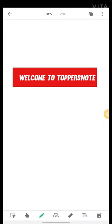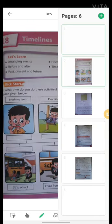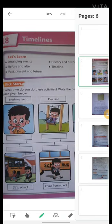Hey guys, today we are doing a reading session. We're going to read chapter 8, Timelines, from the third standard textbook. What are we going to learn in this chapter? It's arranging events before and after, past, present and future, history and historian, and timeline.